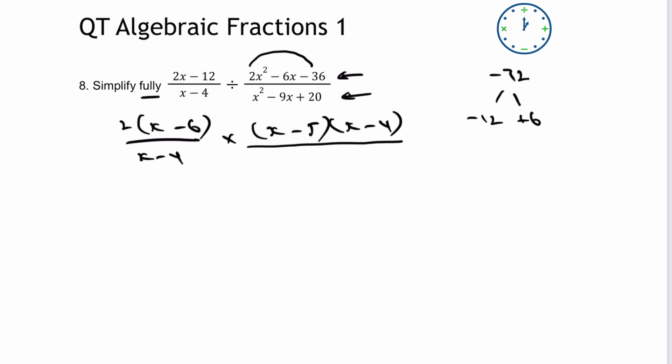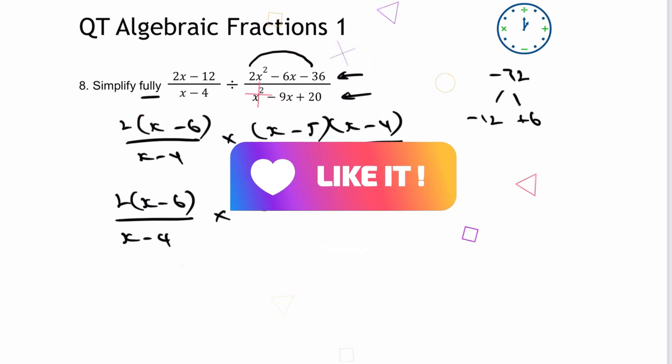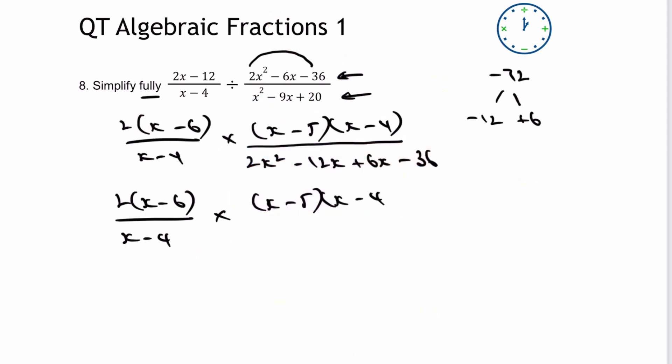So I can rewrite my denominator as 2x squared minus 12x plus 6x minus 36. Nothing's changed. I've just rewritten it in a slightly different way. So I'm going to then work forward a little bit, and I just need to rewrite what I've written before. And let's have a look then at my denominator of the second fraction.